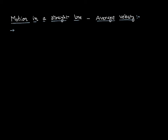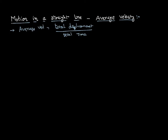As the velocity is varying from time to time, in a given time we need to find the average velocity. Therefore, average velocity is defined as the total displacement of a body — how much it has been displaced between two specified points in a total given time. This is called average velocity.